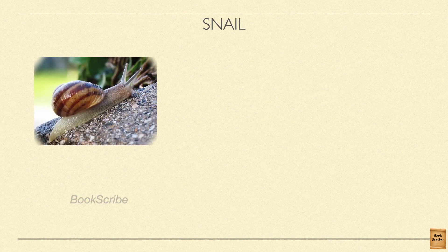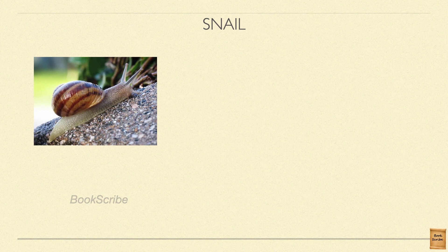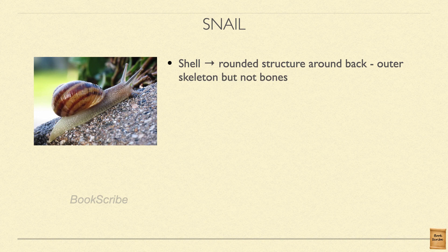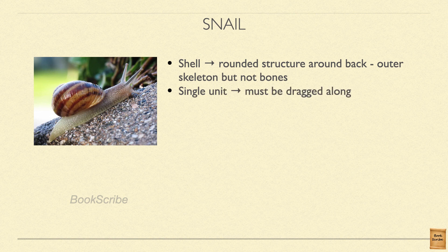Next we are going to see the snail. You must have seen snails in your garden, sometimes in fields and villages, and also coming out in wet weather when it rains. In the middle of the snail, you must have seen a big round structure — this is called the shell of a snail, also called the outer skeleton. But it is not made of bones. The shell is a single part mounted on the body of the snail and does not help in the movement of the snail — the snail has to carry the shell along with it. The shell is mainly for protection; whenever there is danger, the snail will go inside the shell to hide and protect itself.